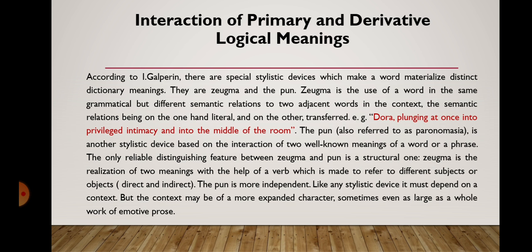Zeugma is the use of a word in the same grammatical but different semantic relations to two adjacent words in the context, the semantic relations being on the one hand literal and on the other transferred. For example: 'Dora plunging at once into privileged intimacy and into the middle of the room.'